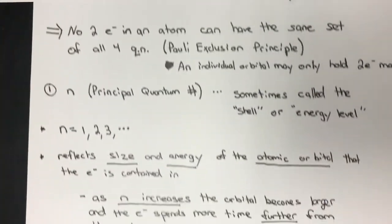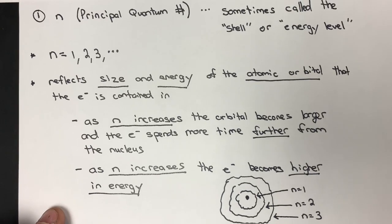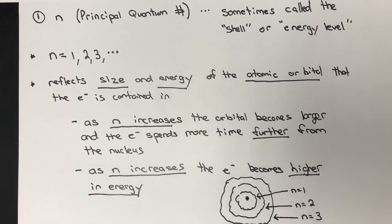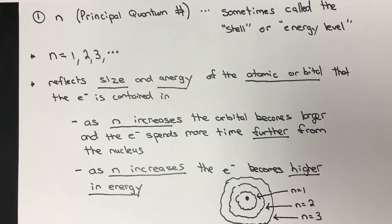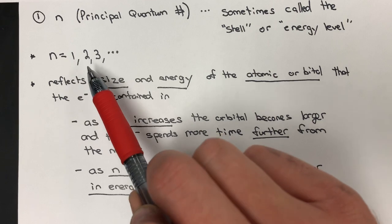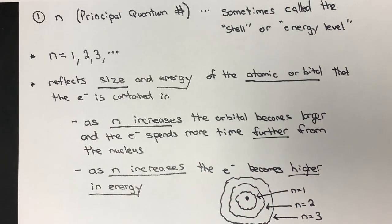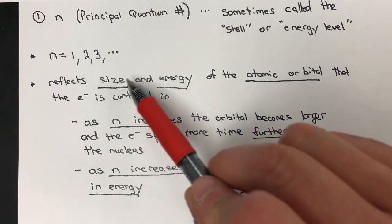The first quantum number we're going to focus on is n, the principal quantum number. Don't really get hung up on the name — bottom line is n is basically what we've referred to as the energy level, or the shell. As far as these n values go, we're always going to be talking about positive whole numbers. What we're really describing is the size and energy of the atomic orbital that the electron is contained in.